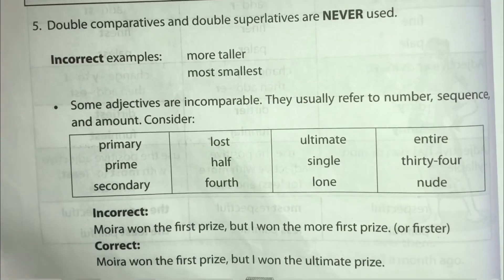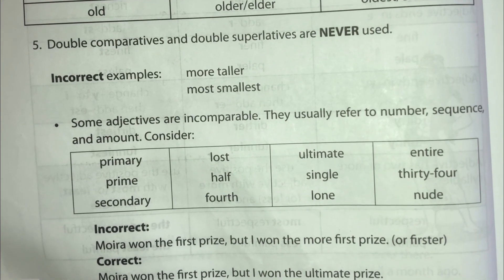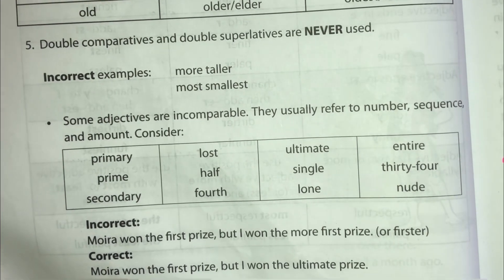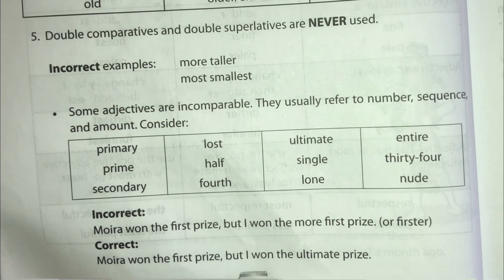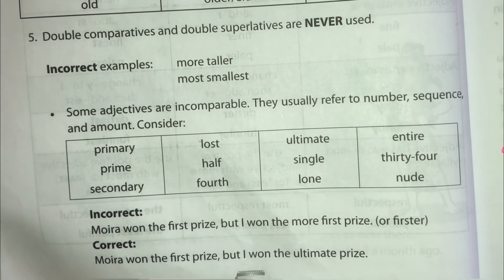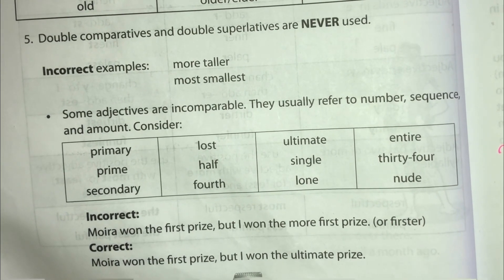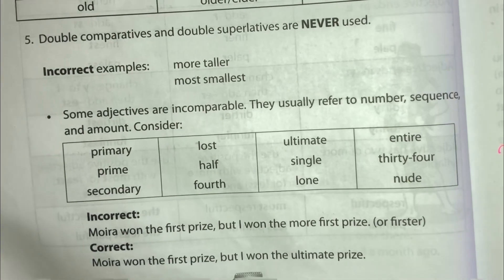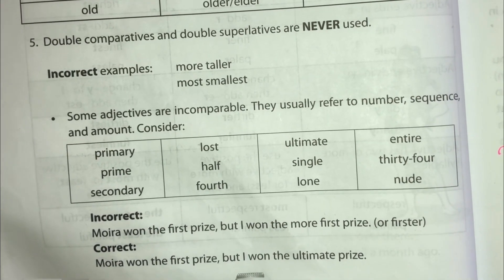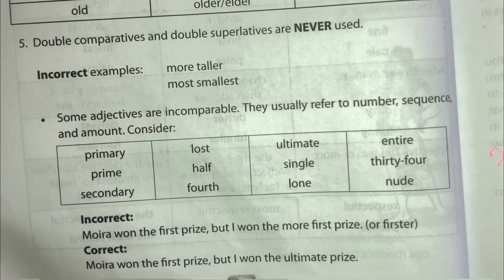Number five: double comparatives and double superlatives are never used. Incorrect examples: 'more taller,' 'most smallest.' Some adjectives are incomparable — they usually refer to number, sequence, and amount. Consider: primary, prime, secondary, last, half, fourth, ultimate, single, lone, entire. So incorrect: 'Moira won the first prize, but I won the more first prize' or 'firster prize' — that is incorrect. Correct: 'Moira won the first prize, but I won the ultimate prize.'